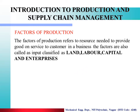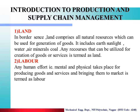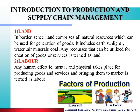The first factor is land. In the broader sense, land comprises all the natural resources which can be used for generation of goods. It includes earth, sunlight, water, air, minerals and coal. Any resource that can be utilized for the creation of a good or service is termed as land. And it affects the production.